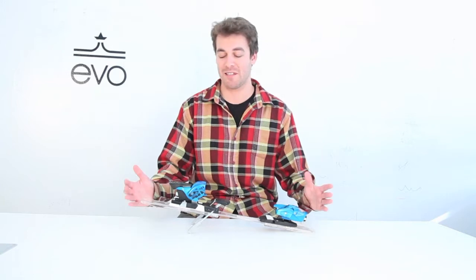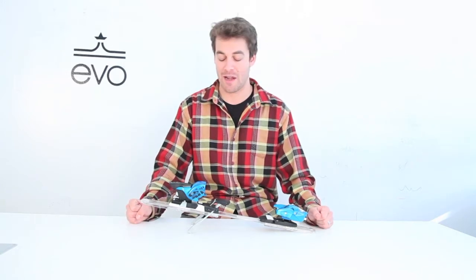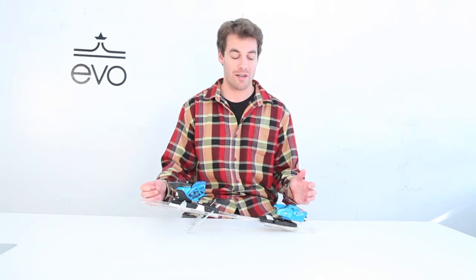Jordan here at Evo, and this is the Salomon STH 14 binding. A great advanced expert binding for the skier that is not quite going to fit in that Salomon 9 to 16 DIN range of the STH 16.